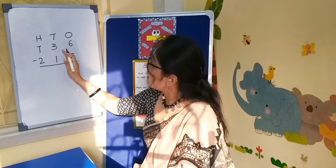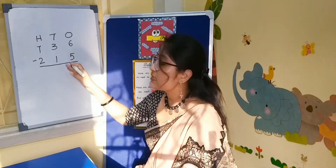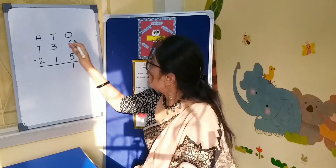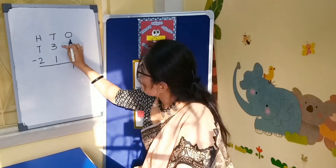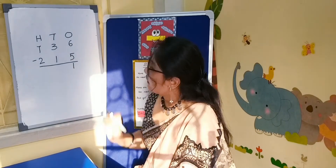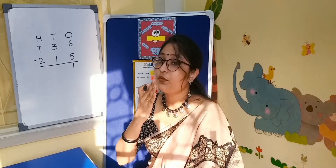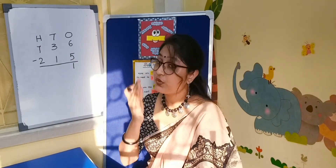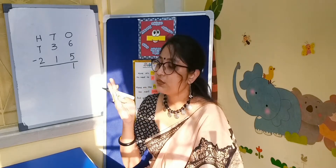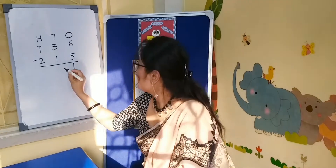Then we come to the next one, that is the tens column. There is 3 and there is 1. We have to count from 1 up to 3: 1, 2, 3. That is 2.